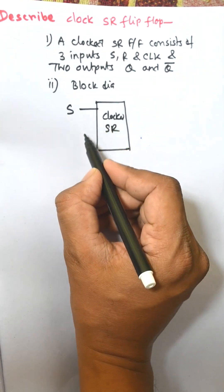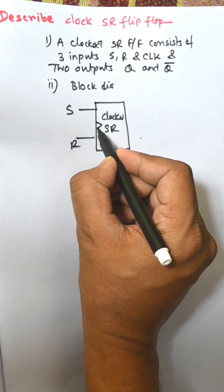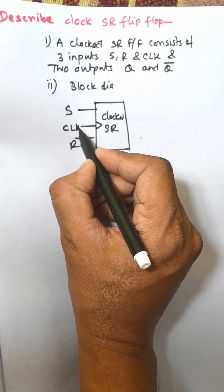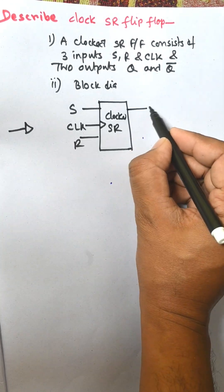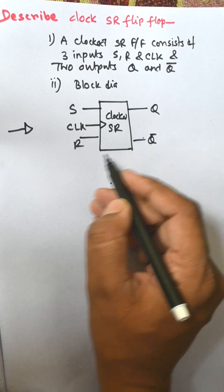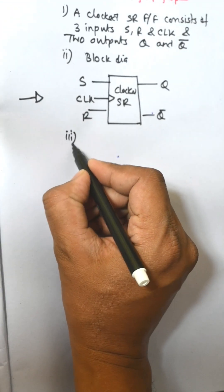This is the symbol of CLK and this is Q and Q-bar. Now third point is circuit diagram.